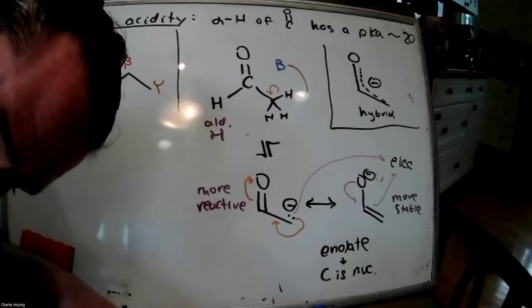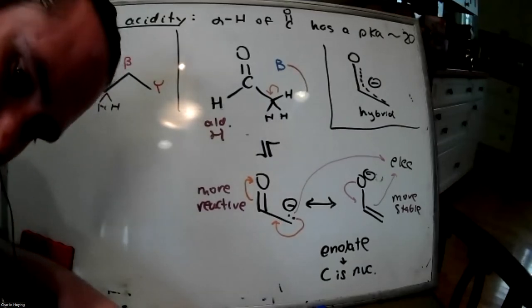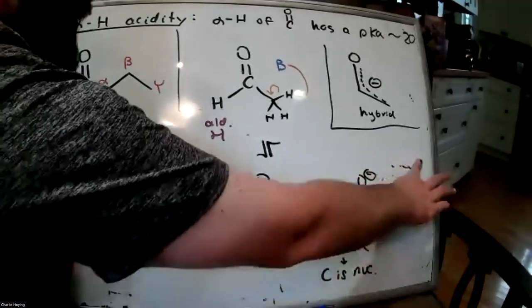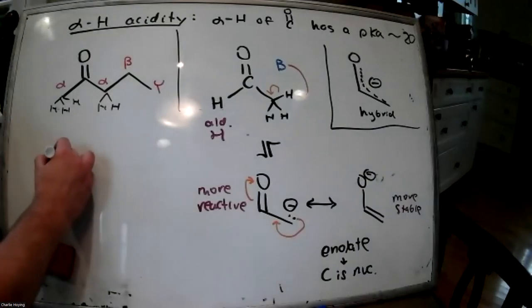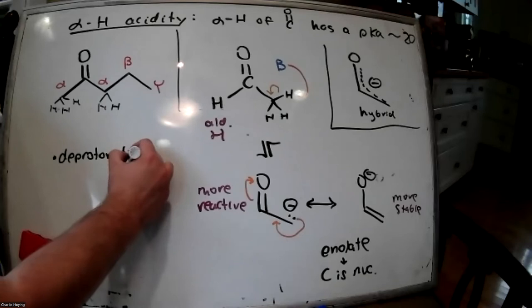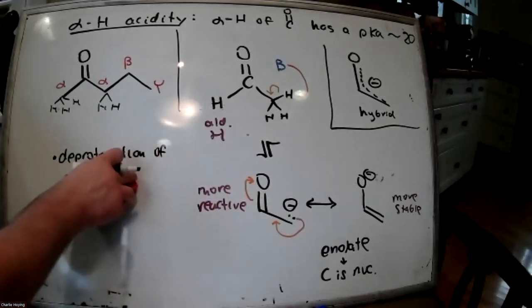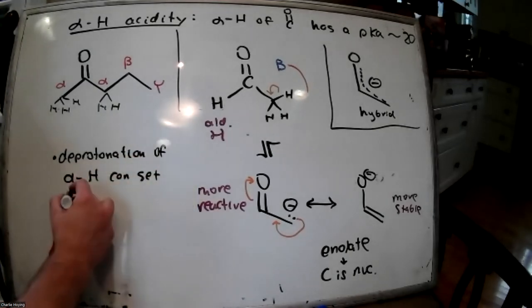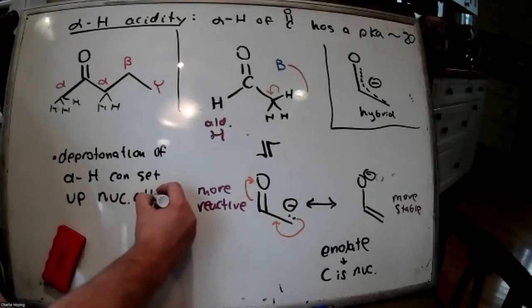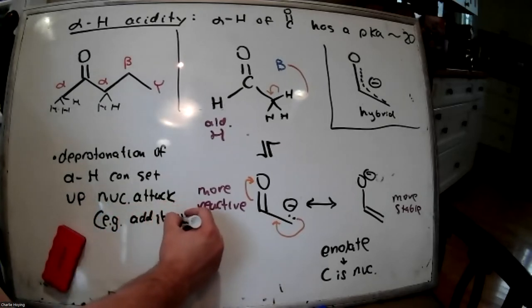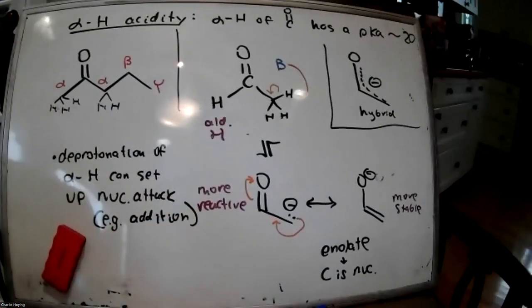If the Ka of alpha hydrogens is so low, why are alpha hydrogens kicked off to form the enolate? The answer is: you would have to use a very strong base. Because enolates are nucleophiles, deprotonation of an alpha hydrogen can set up an addition reaction and a nucleophilic attack — such as a substitution but more often an addition.